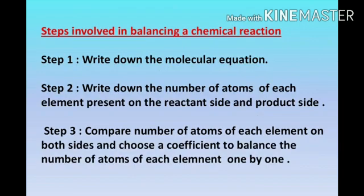Here are the steps involved in balancing a chemical equation. Step 1: write down the molecular equation, then note down the number of atoms of each element present on the reactant side and the product side. Finally, compare the number of atoms of each element on both sides and choose a coefficient to balance them one by one. This method is called the hit and trial method of balancing a chemical equation.